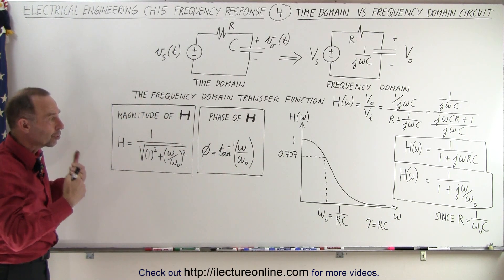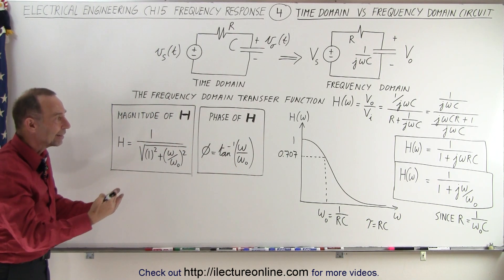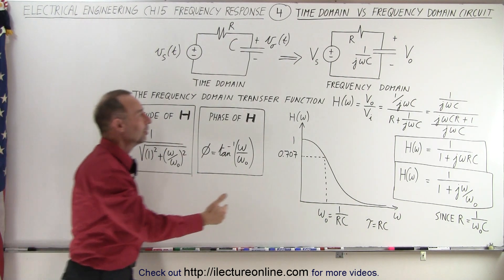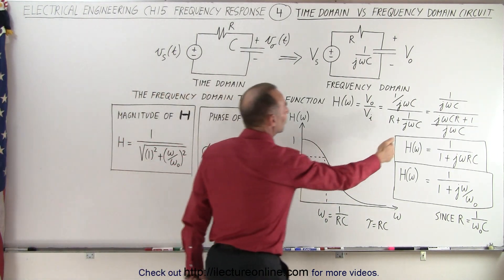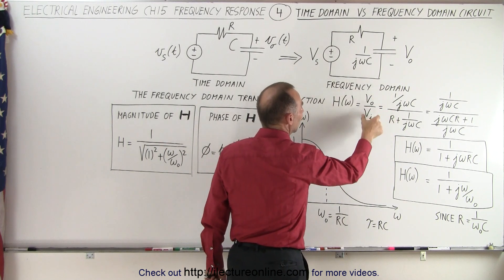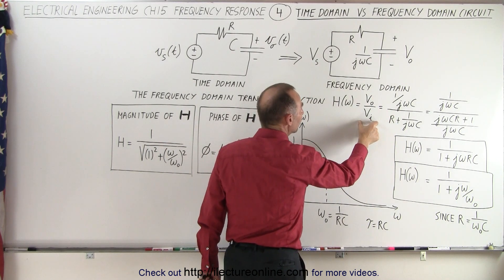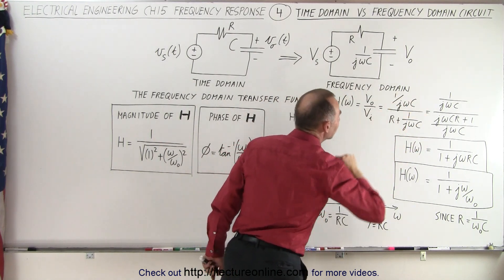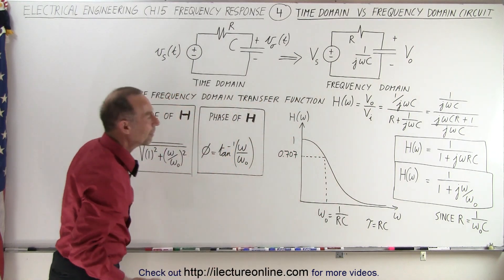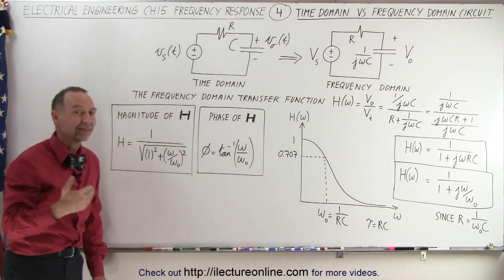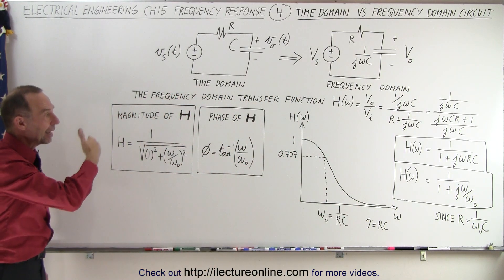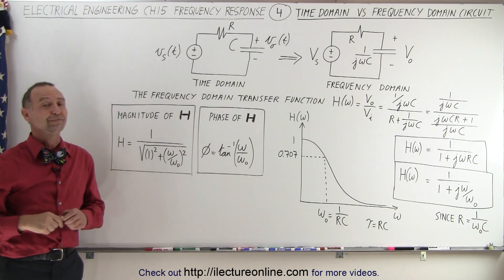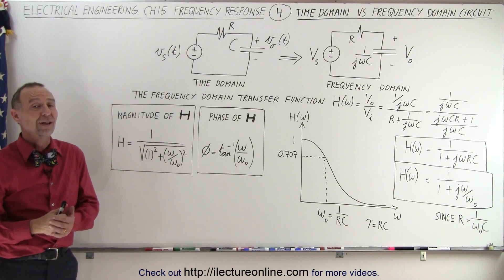Hopefully that gives you a good insight into what the transfer function is in this example. It's simply calculating the output voltage divided by the input voltage in the phasor domain — the frequency domain. That's the difference between the time domain and the frequency domain in a circuit.